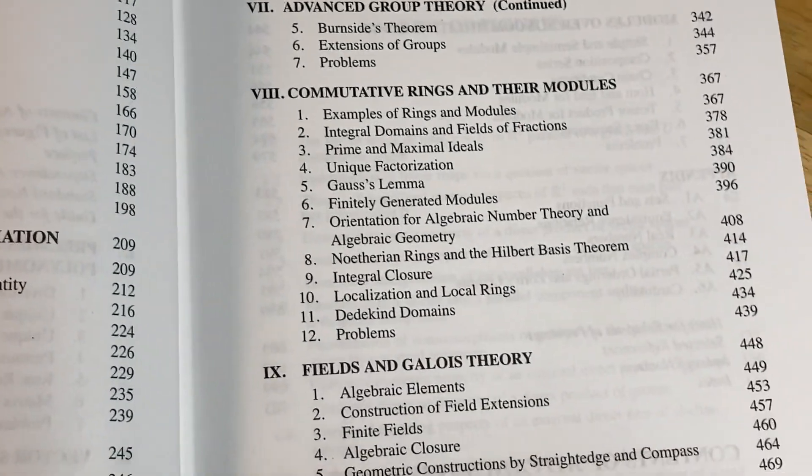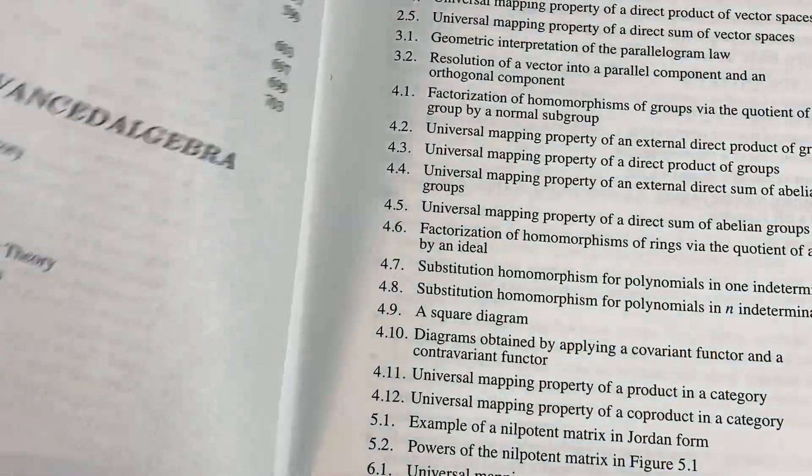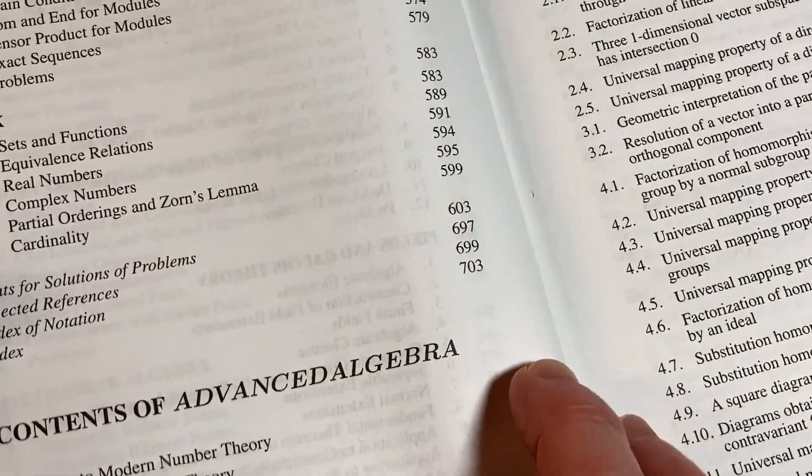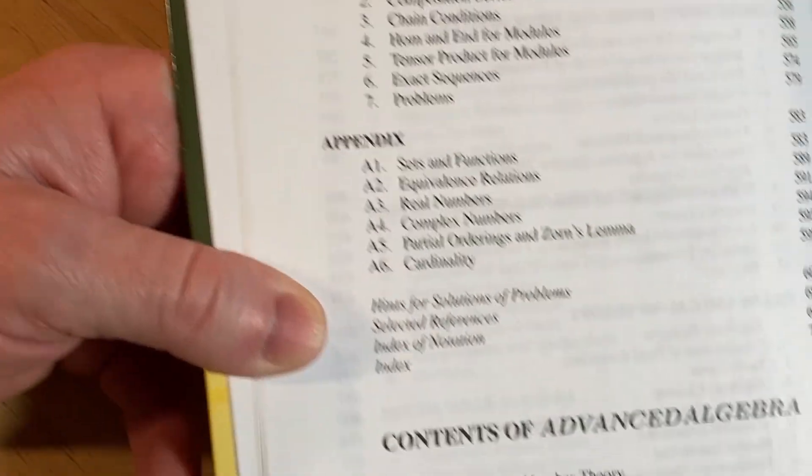Commutative rings and their modules, and then fields and Galois theory—quite a bit there. And then we have modules over non-commutative rings, and then there's an appendix, and then there's hints and solutions of problems.